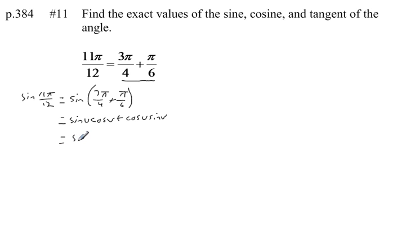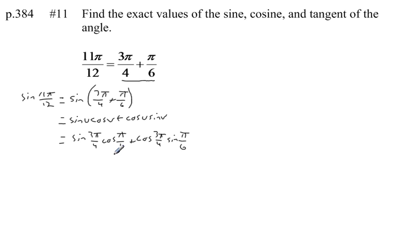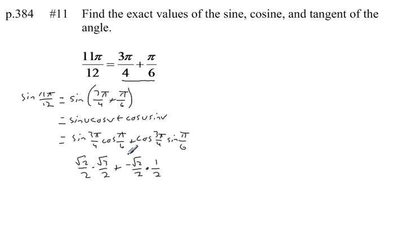This equals the sine of 3π/4 times the cosine of π/6 plus the cosine of 3π/4 times the sine of π/6. Our unit circle comes in very handy here. The sine of 3π/4 is √2/2, cosine of π/6 is √3/2, cosine of 3π/4 is −√2/2, and sine of π/6 is 1/2. I got all those values from my unit circle.